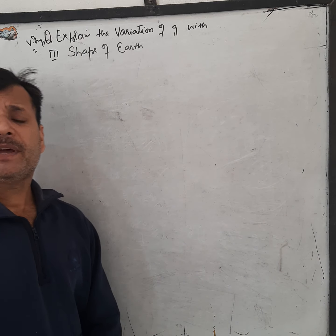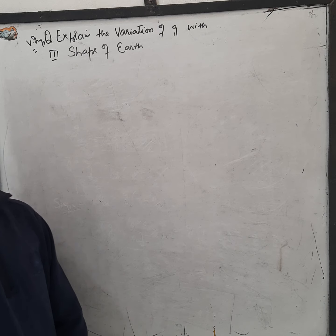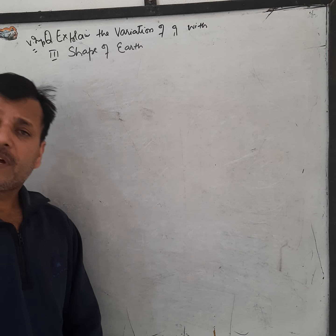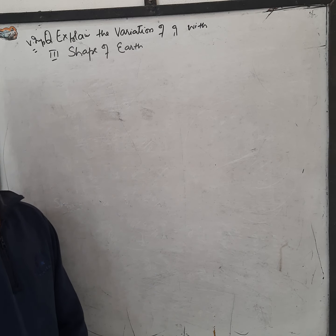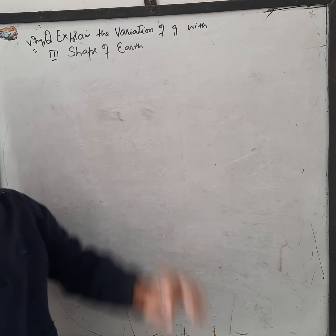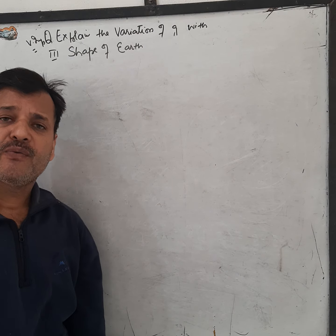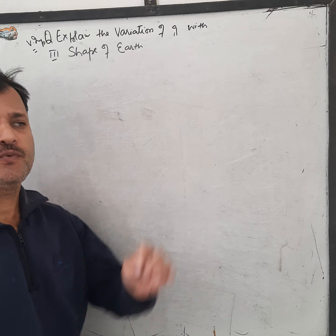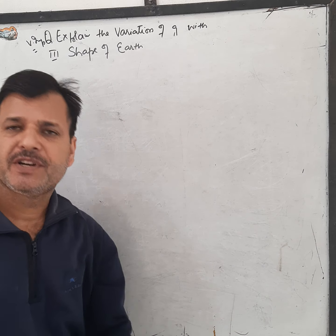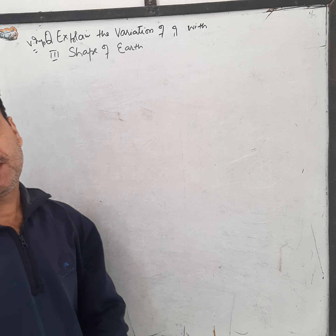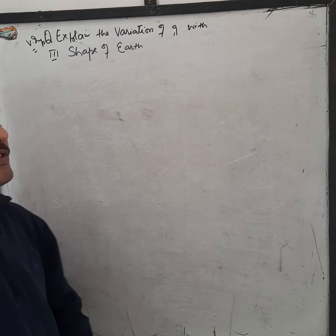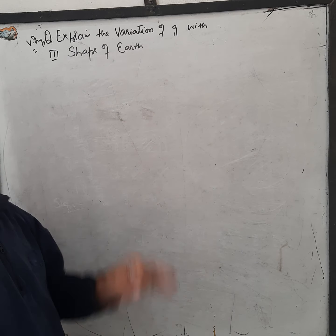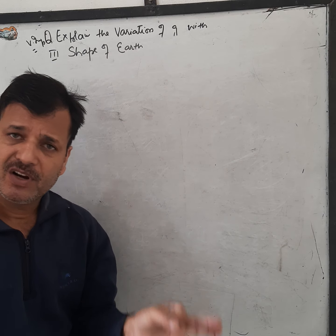Dear students, we have two parts of this question: variation of g with height, then the next part is variation of g with depth. Now our third part is variation of g with shape of earth.